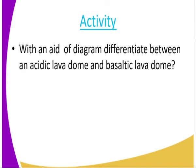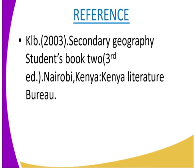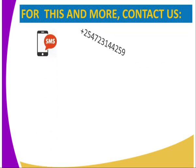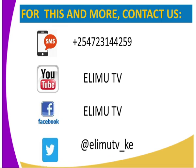Activity for today: with the aid of a diagram, differentiate between an acidic lava dome and the basaltic lava dome volcanoes. For more information, you can visit the KLB 2003 Secondary Geography Student Book 2, third edition. You can also reach us via SMS, YouTube, or Facebook.